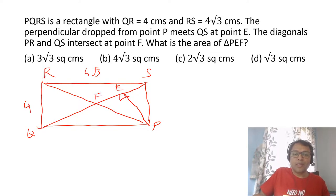If I draw a perpendicular here at point E, and diagonals intersect at point F, we want the area of PEF. The moment you see root 3 and 4 and 4 root 3, you should make out it's a 30-60-90 angle. It's the first thing you should make out. So if this is 4 and 4 root 3, that means we know QRS is 30-60-90, so QPS also will be 30-60-90. Which means this will be 60 degrees.